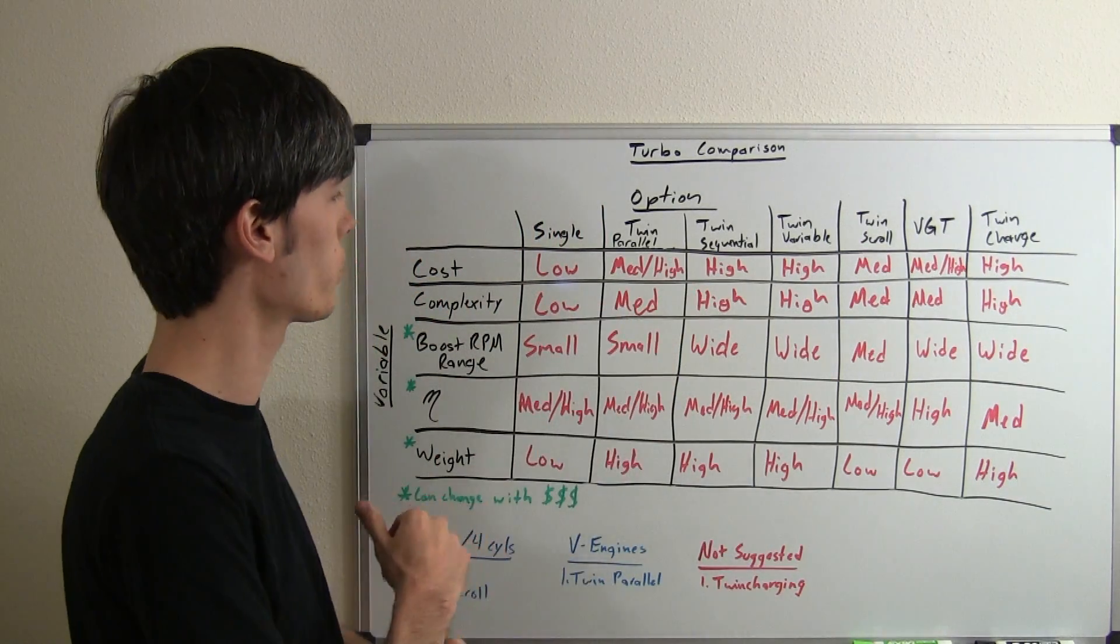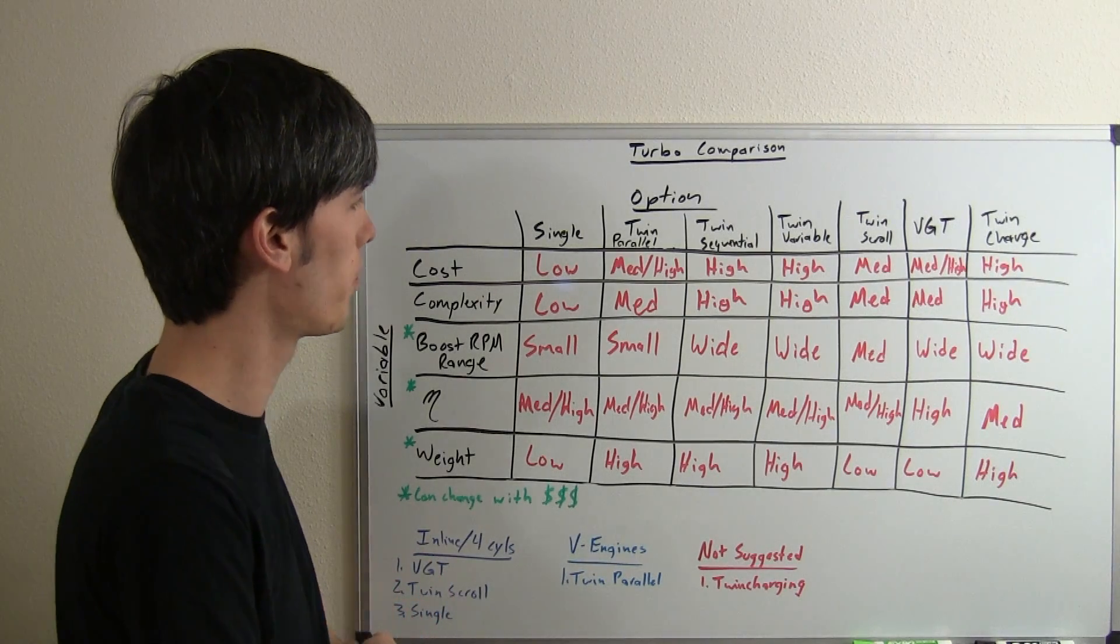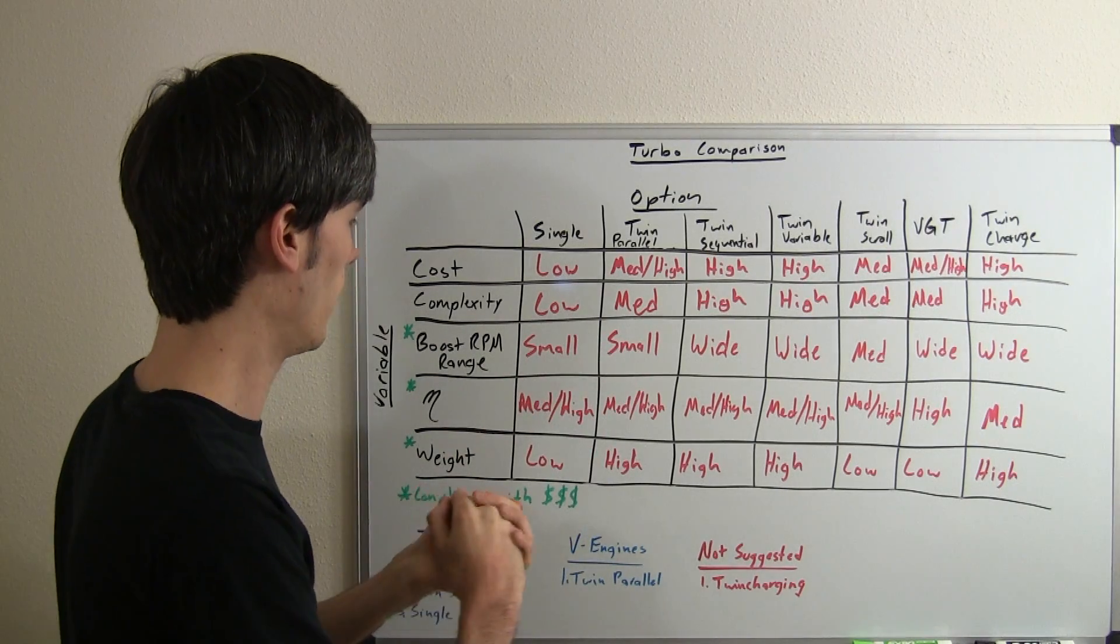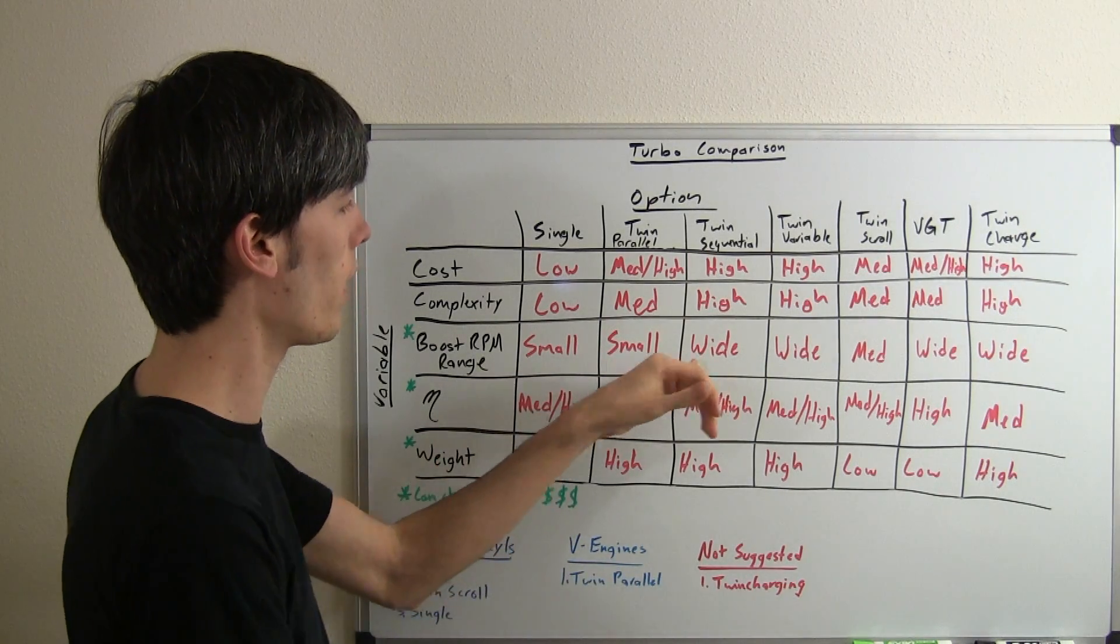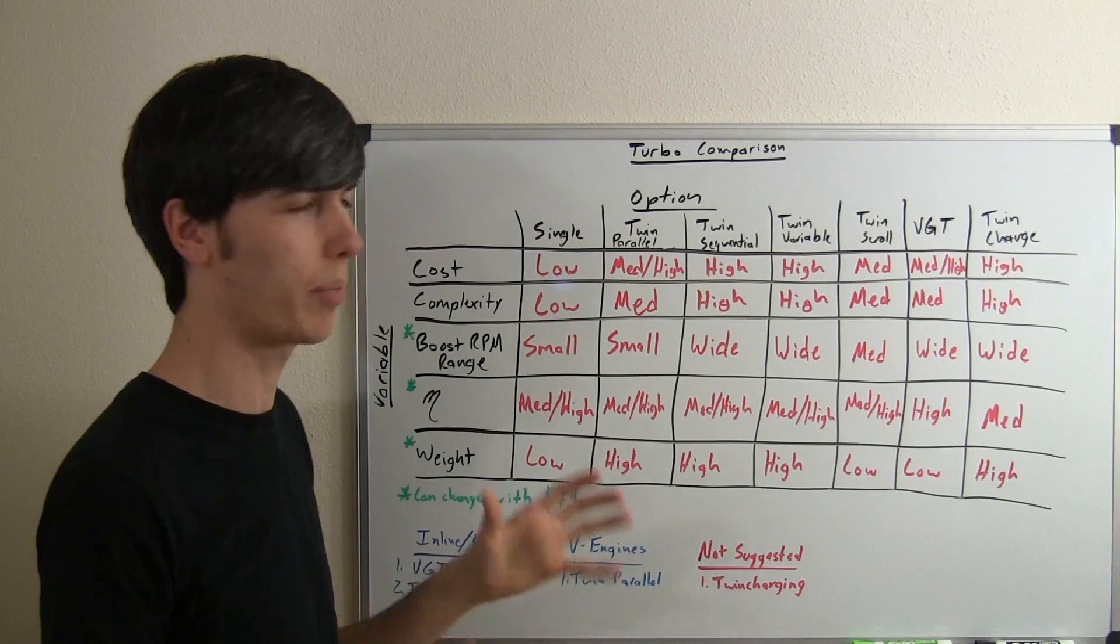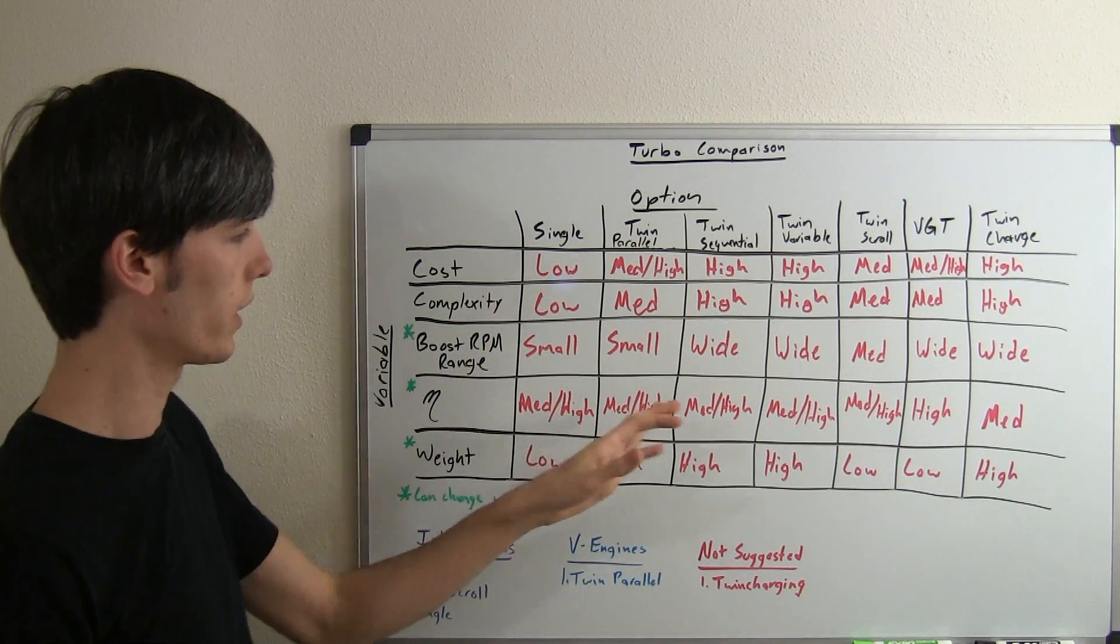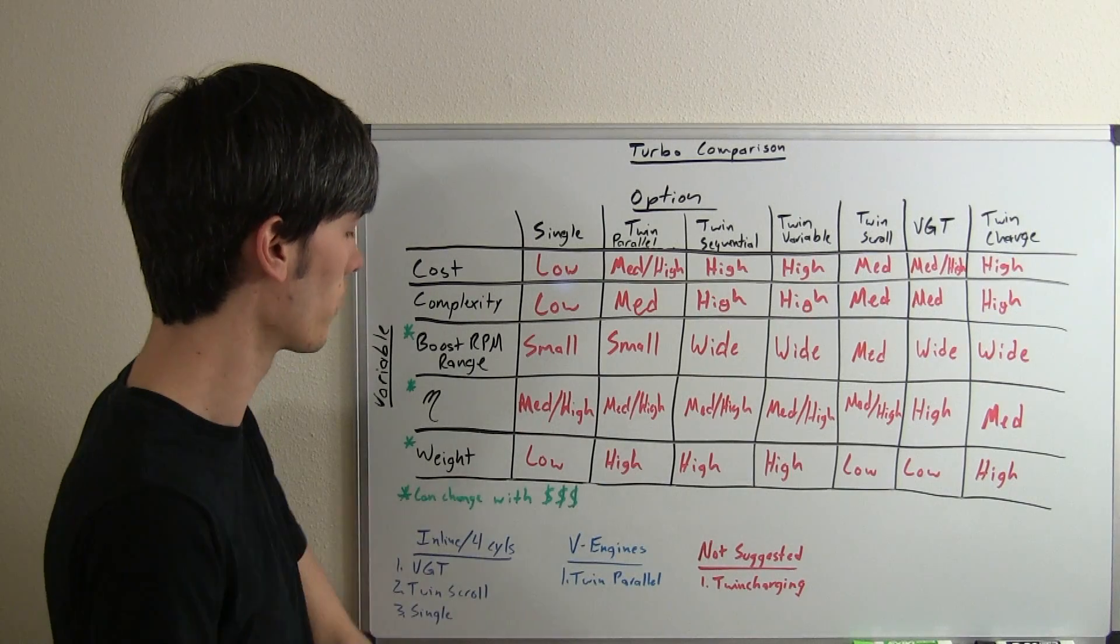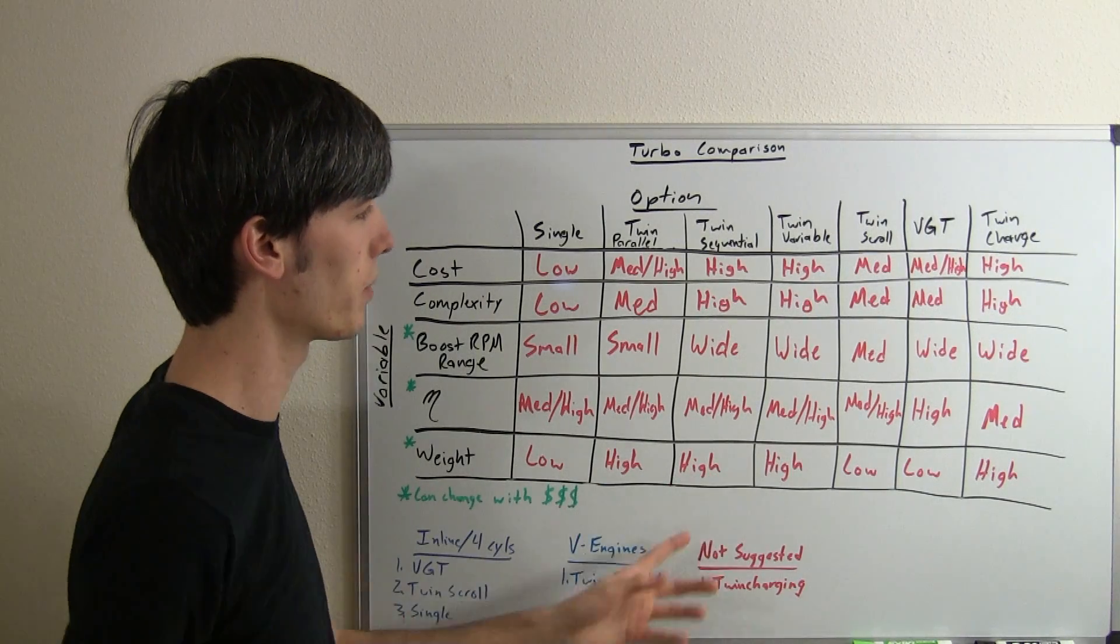So twin sequential: cost is going to go up, complexity is going to go up—you've got different valves that are activating. Boost RPM range though is wide, so that's what you want to see, so you can have power across the whole rev range. Efficiency: medium-high, kind of like these other options. And then the weight of course is going to be high.